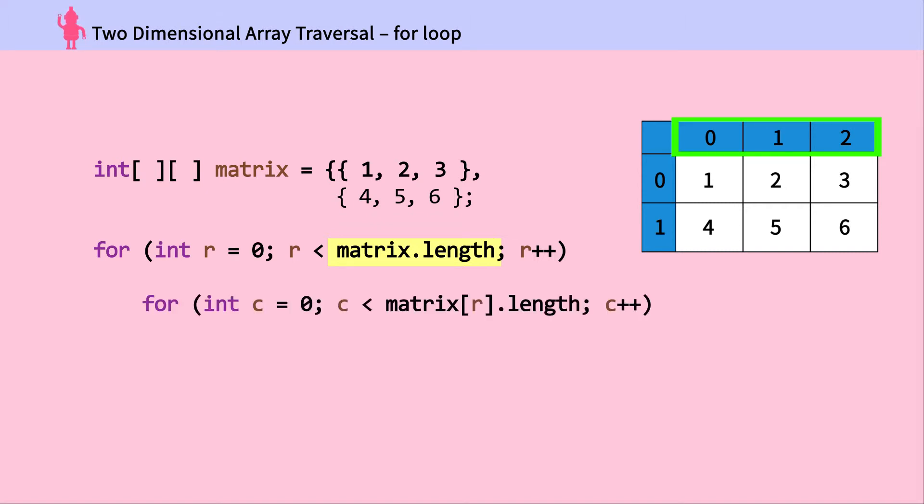The inner for loop traverses through the columns in that row. C is the variable for column. Matrix bracket R bracket dot length is number of columns in a row. Print elements at matrix bracket R bracket bracket C bracket.